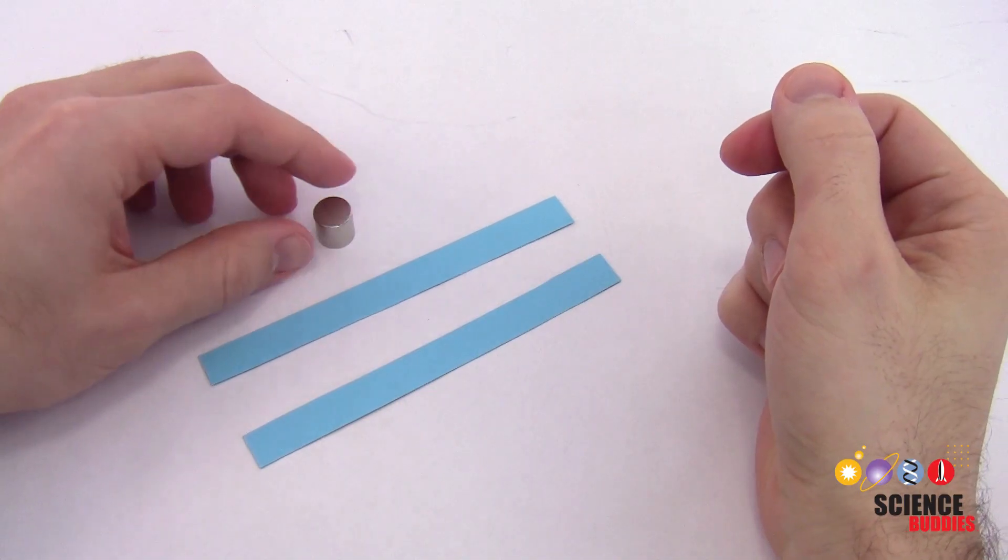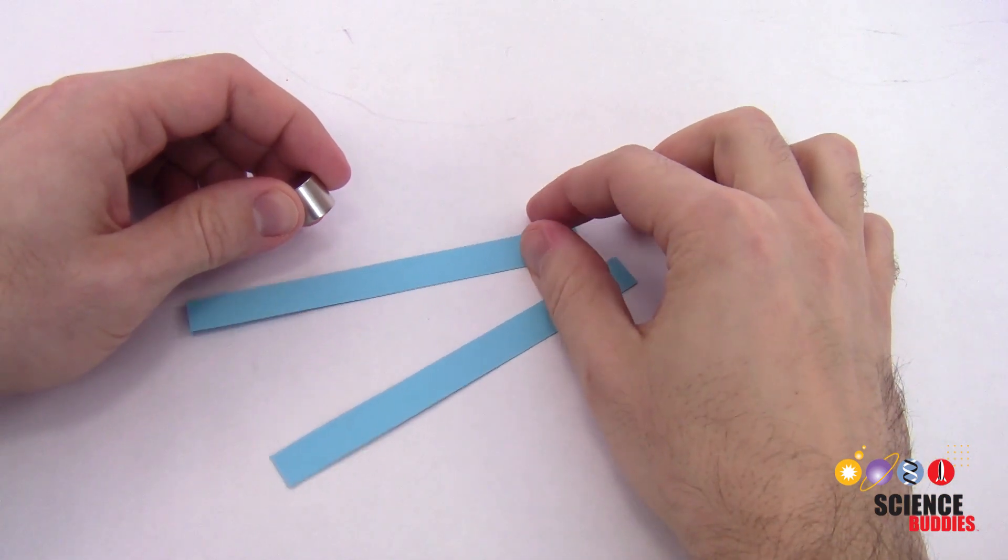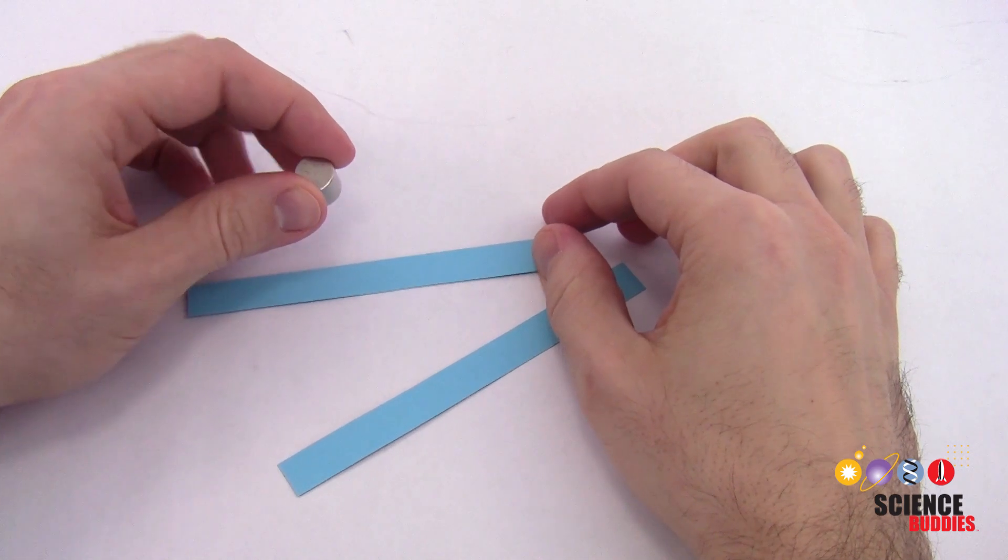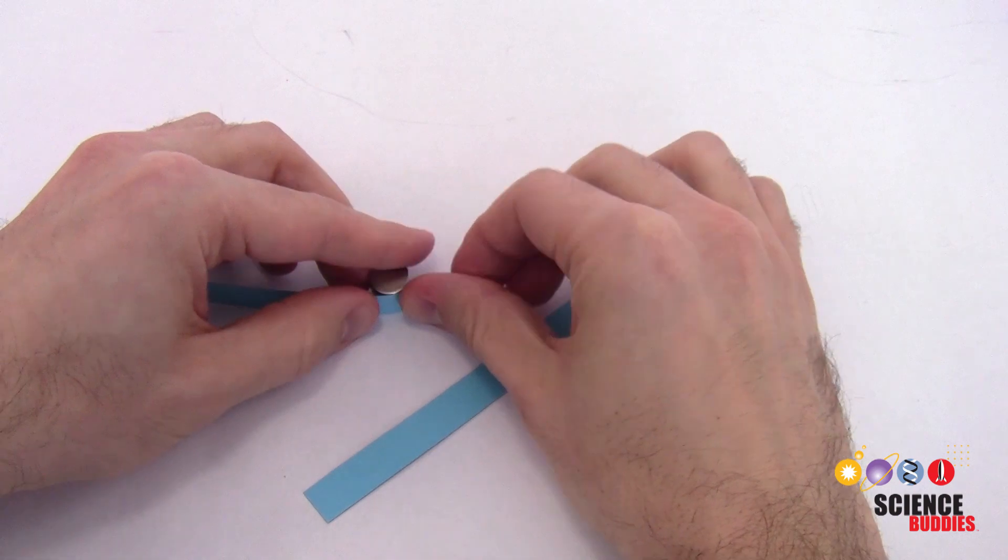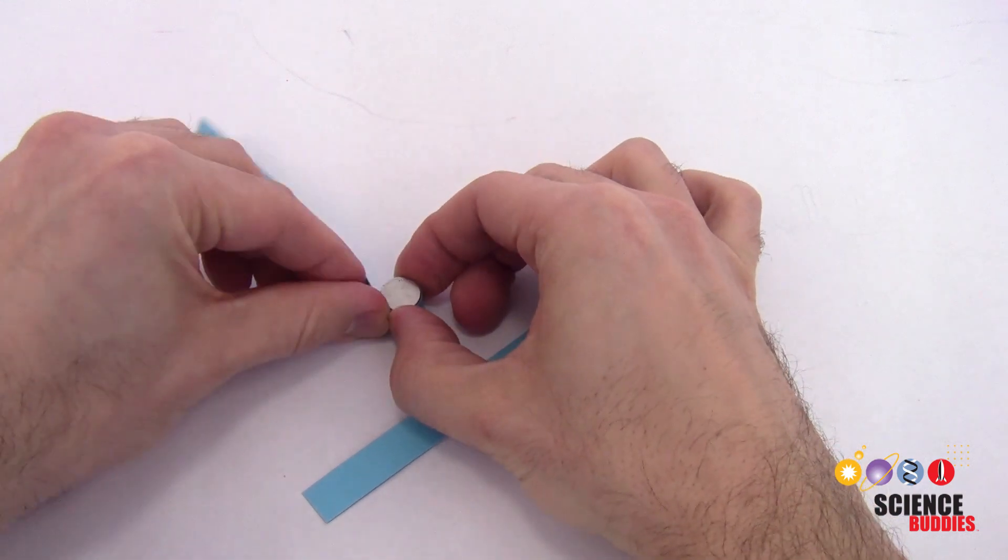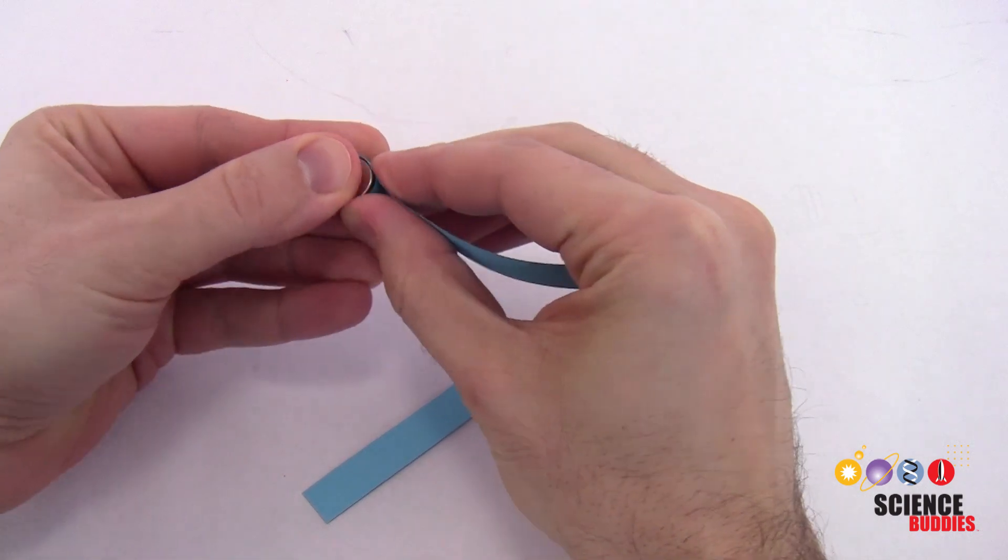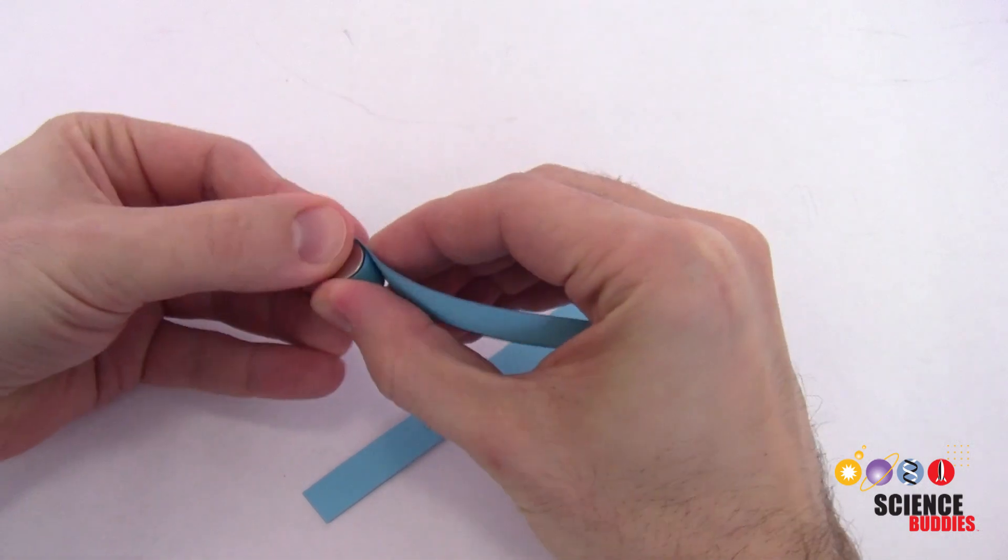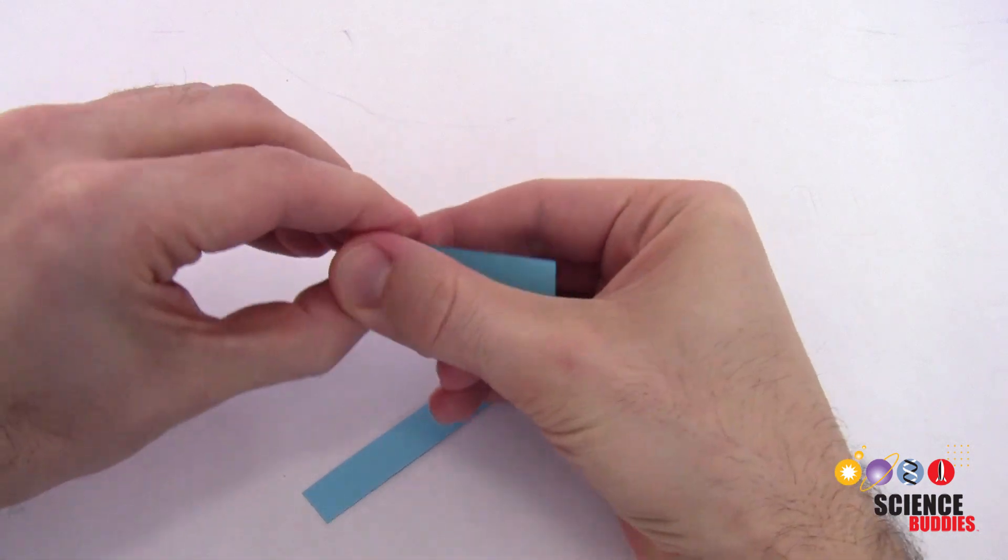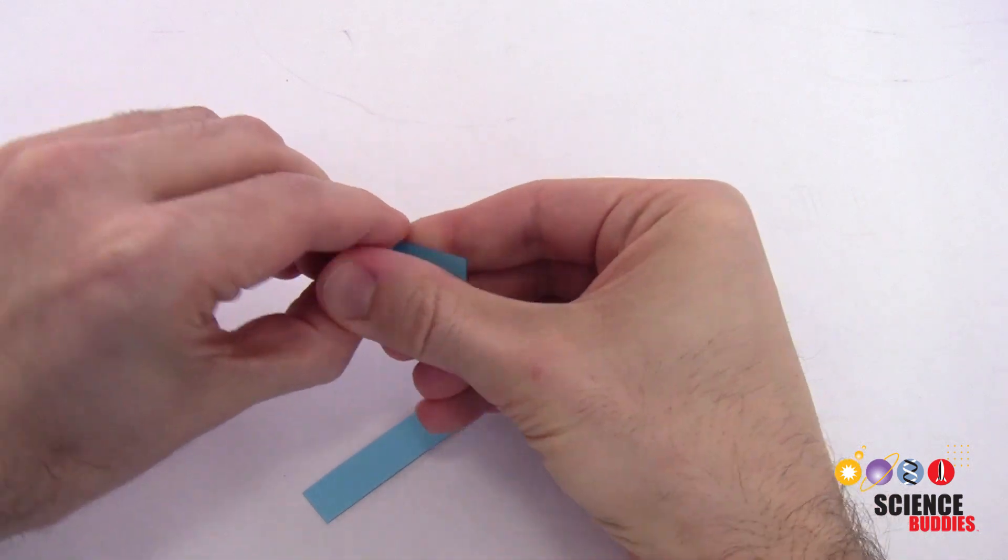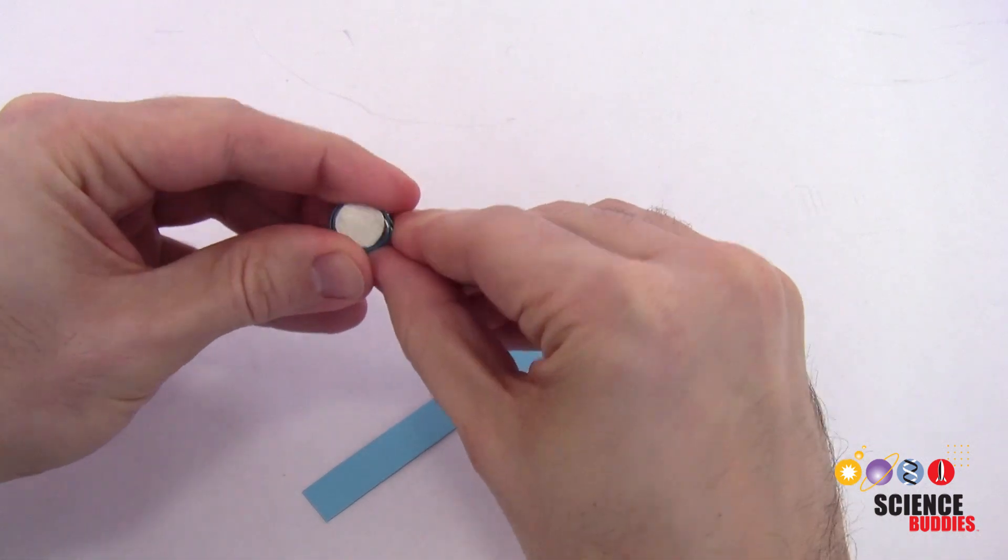So our next step here, we are going to take our neodymium magnet and the two long strips of paper, and we're going to use these to make the wire coil for your speaker. You're going to take one of these strips and wrap it tightly around the magnet. This strip is going to act as a spacer so the outer piece of paper does not rub up against the magnet when it's moving—there's a little bit of a gap there. Wrap that around tightly, and then after that is on there tightly, you're going to take the second piece and wrap that around the outside of the first piece.